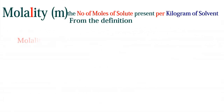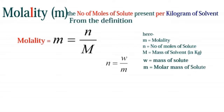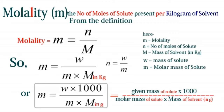Molality is the number of moles of solute present per kilogram of the solvent, equal to n / M, where n is the number of moles of solute and M is the mass of the solvent in kilograms. Since n = W / M, where W is the mass of the solute and M is the molar mass, putting this in the equation gives: molality equals the given mass of the solute multiplied by 1000, divided by the molar mass of the solute multiplied by the mass of the solvent in grams.